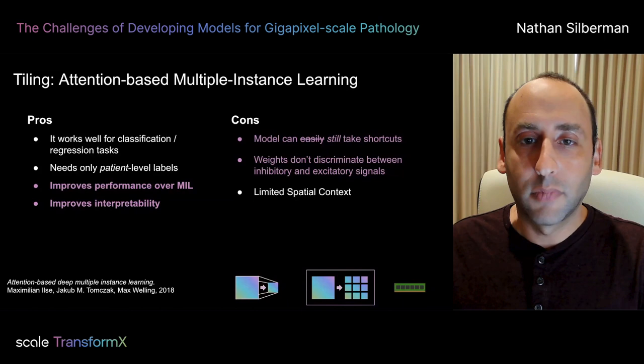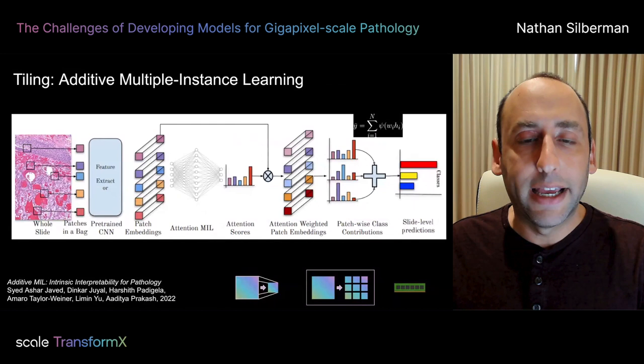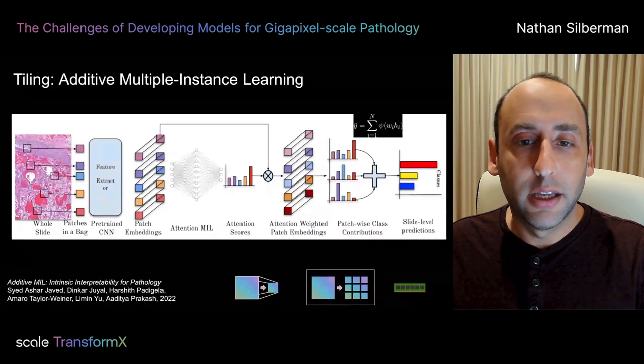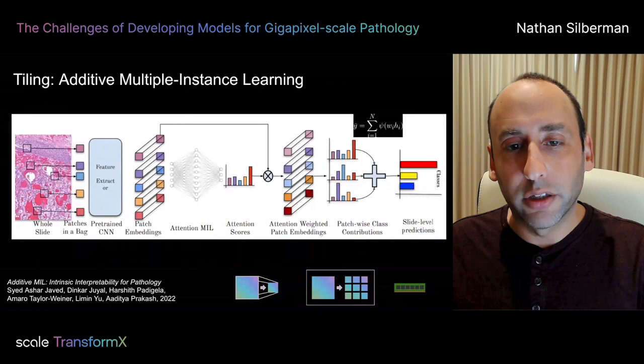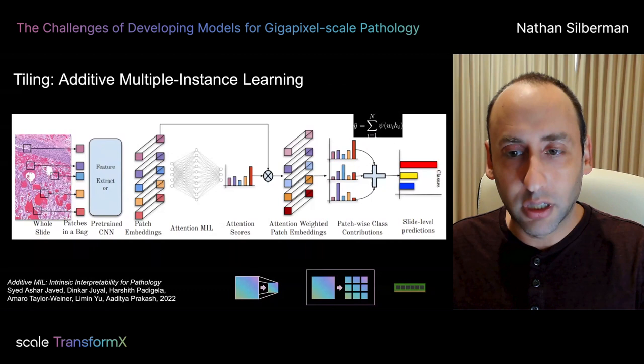An approach just recently published which attempts to improve on this is additive multiple instance learning. The algorithm samples tiles from the slide and produces both predictions and weights per tile, but with a couple of important differences. Rather than aggregate tile predictions through a non-linearity, additive MIL simply takes a sum over non-linearly weighted patch predictions. Additionally, the model is able to produce per-class weightings. These two together mean that a positive weight value can be clearly interpreted as excitatory for a class, and negative weight values as inhibitory for a class.